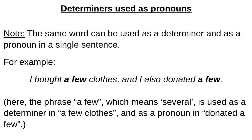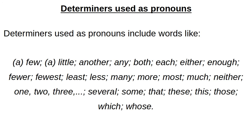Remember: 'a few' means several, while 'few' means not many. Similarly, 'a little' means some, while 'little' means not much. Determiners used as pronouns include: a few, a little, another, any, both, each, either, enough, fewer, fewest, least, less, many, more, most, much, neither, one, two, three, several, some, that, these, this, those, which, whose.